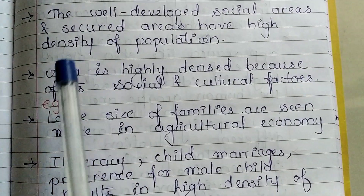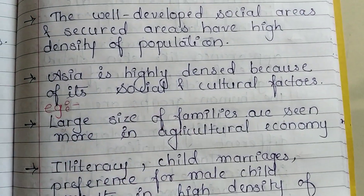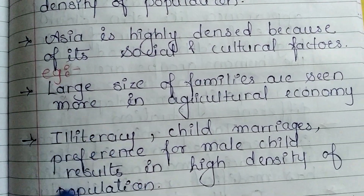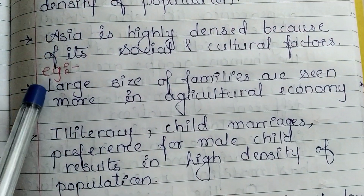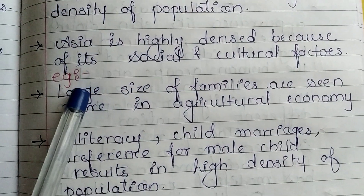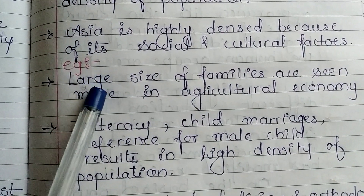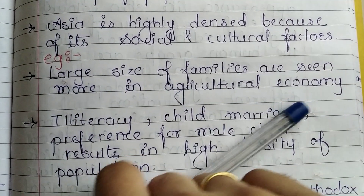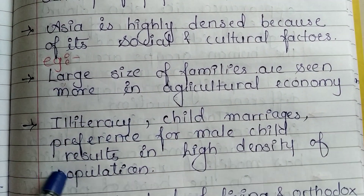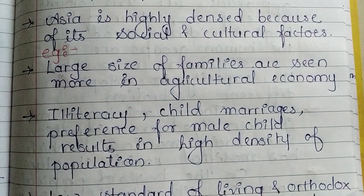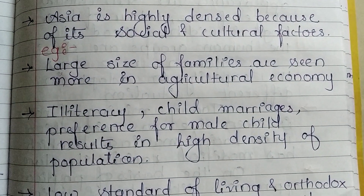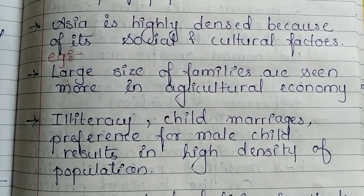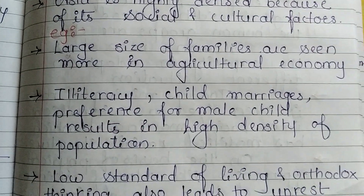Asia is highly dense because of its social and cultural factors. Asian countries are highly dense because large family sizes are more common in agricultural economies. Since agriculture is the predominant occupation here, people engaged in agriculture believe in having large families.